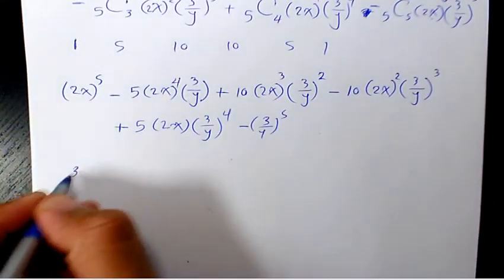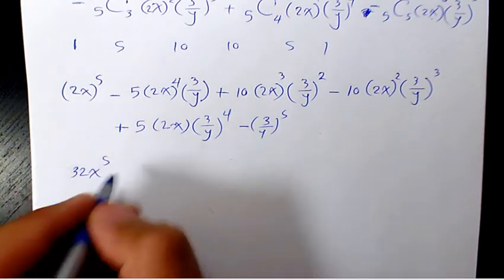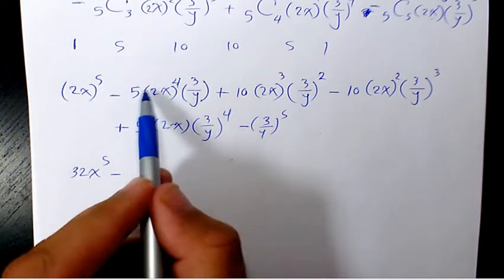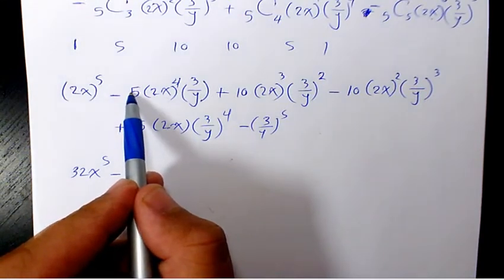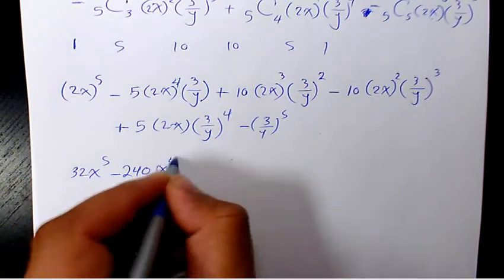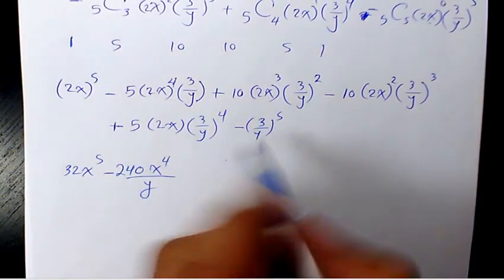So the first one is going to be 32x^5. 2 to the power 4 is 16, 16 times 5 is 80, 80 times 3 is going to be 240x^4 divided by y.